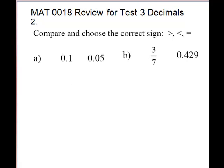Problem 2. We're going to compare and choose the correct sign. Greater than, less than, or equal to. So for our first one, a, 0.1 and 0.05. You just match up place value if you have both decimals.